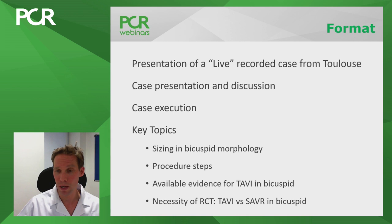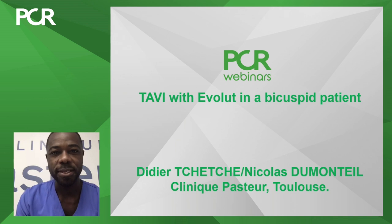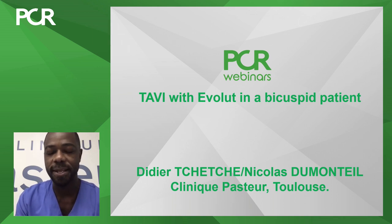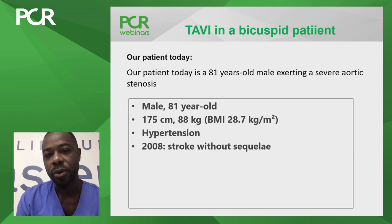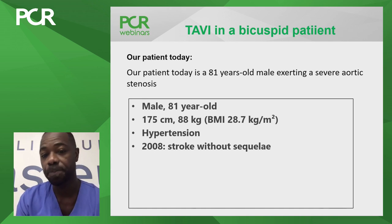DDA introduces the case from Toulouse: an 81-year-old gentleman referred for progressive worsening shortness of breath. He had a history of being slightly overweight, hypertension, and a prior stroke without sequelae. He had experienced an acute pulmonary edema two months prior and was extremely symptomatic despite medical therapy.